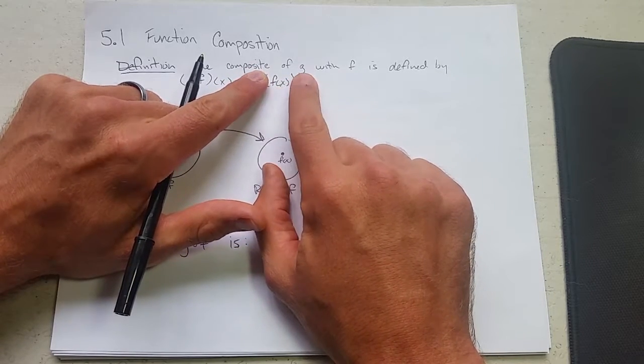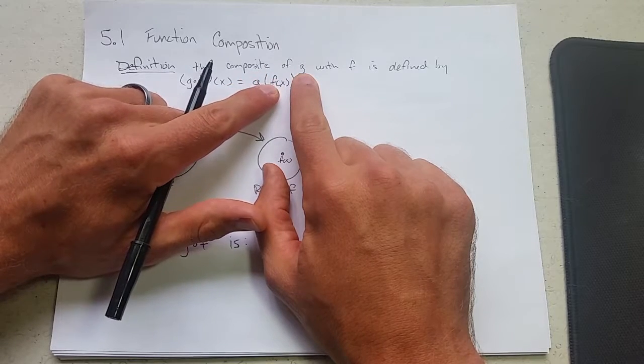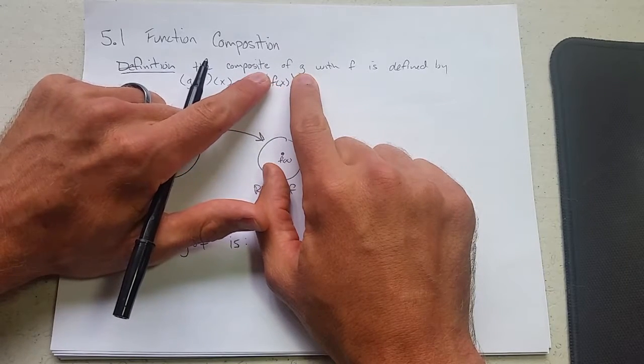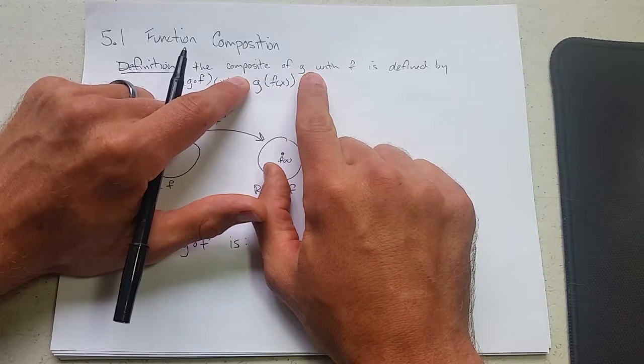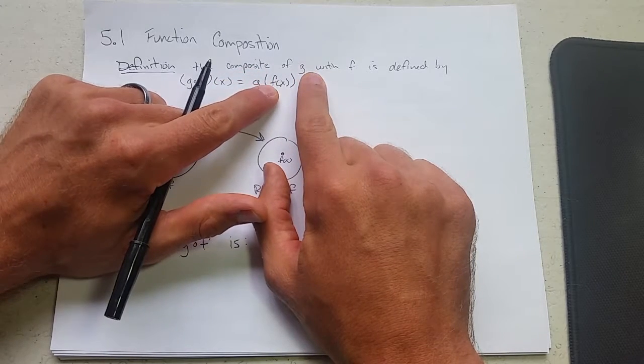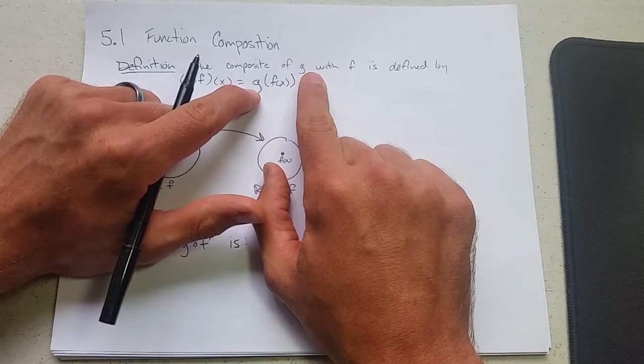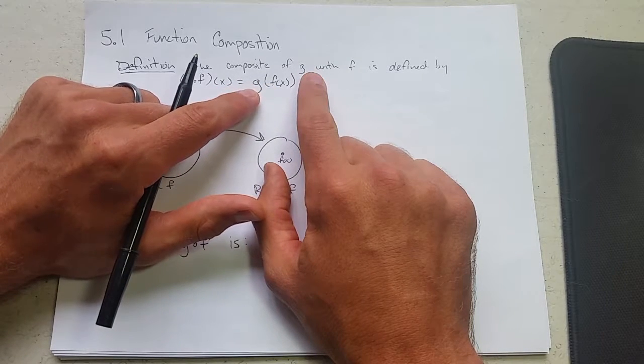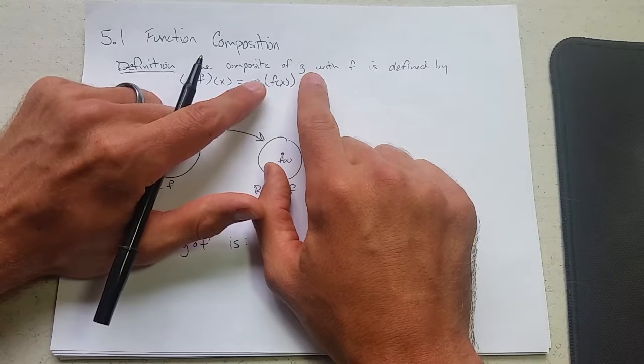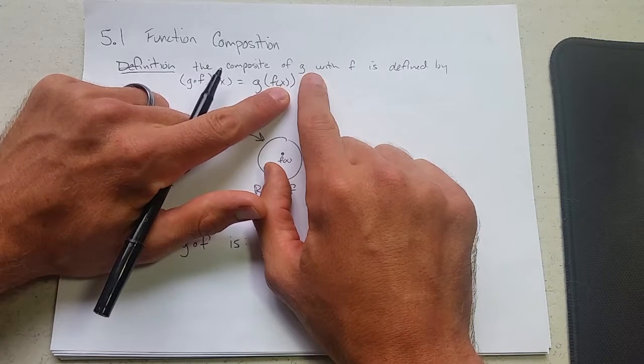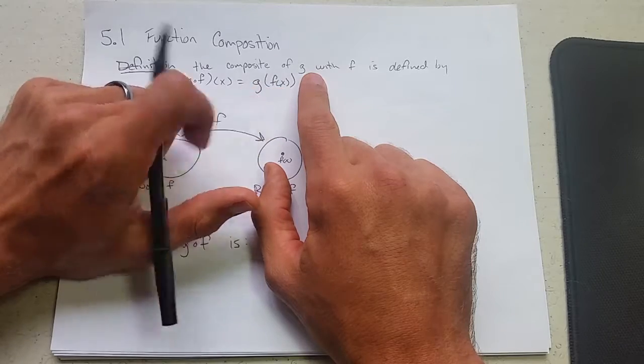So whatever x is, you first f it. So you do whatever the function f is to x. The result of that, you then g that. So it actually goes f first, and then g. It's a bit strange because in English we read left to right, and when I say this, I say g of f of x. But you do f first, g second.